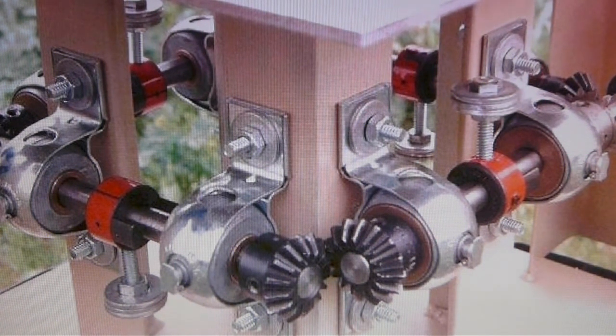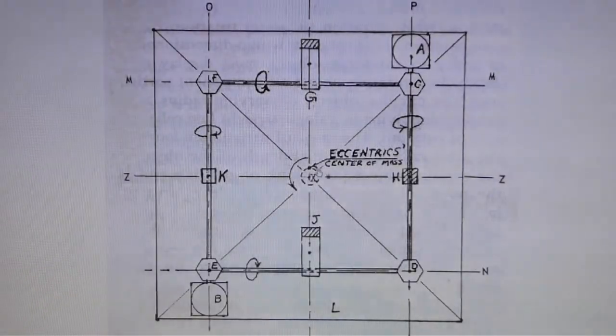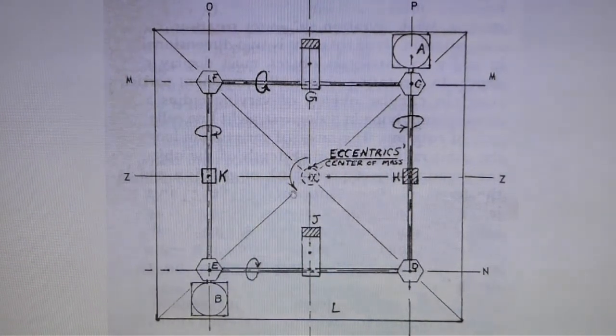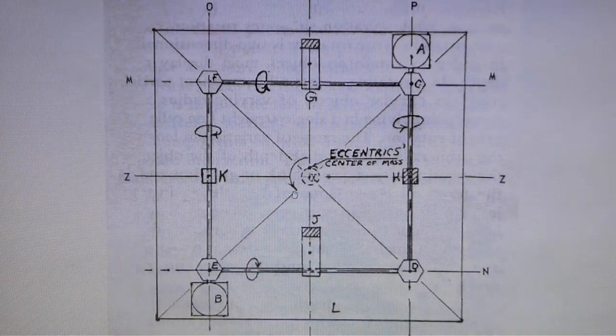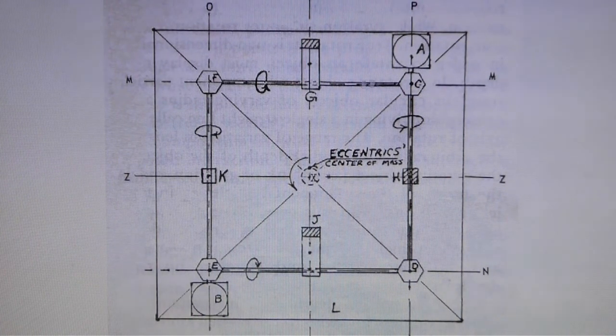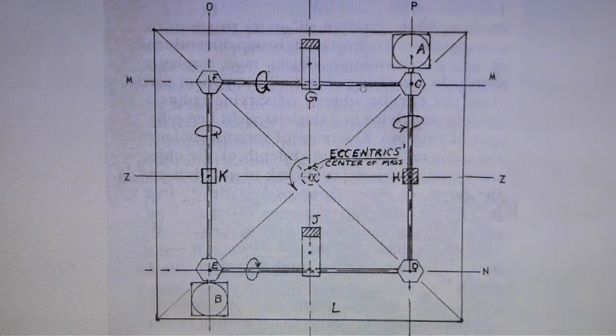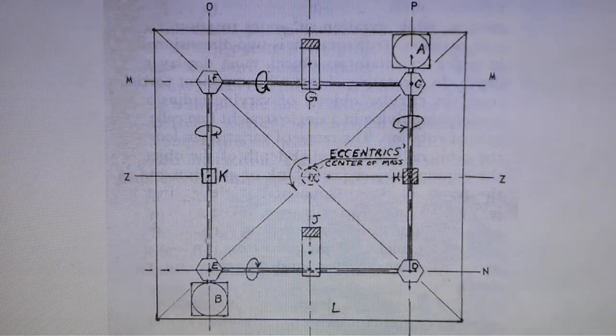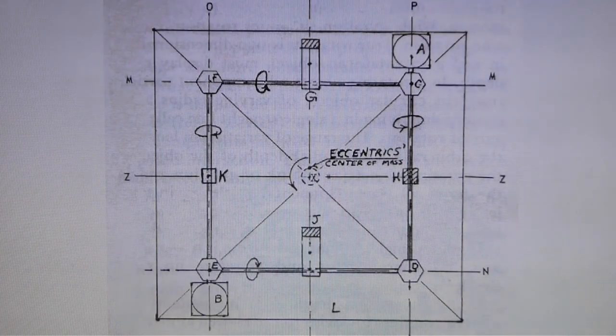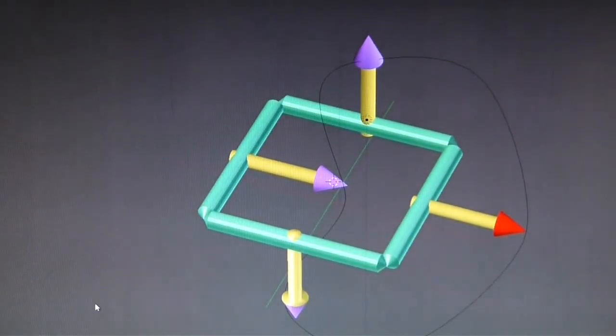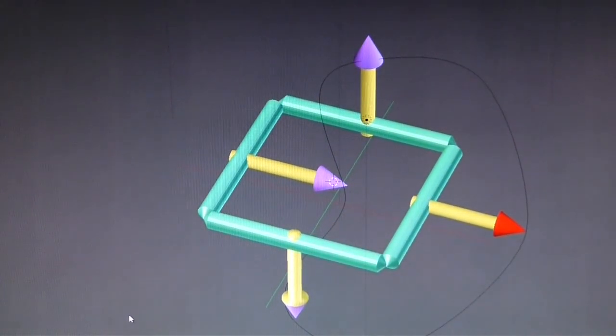But what they missed was in the center over here you can see this arrow, circular arrow. This whole mechanism is supposed to rotate at a one-to-one ratio with these drive shafts. And if you do that, I used Blender to just make a basic 3D model, you end up with something like this.